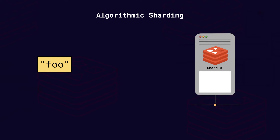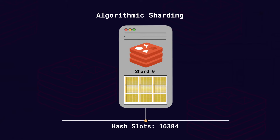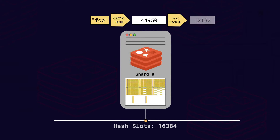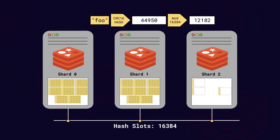Redis uses a clever approach to solve this problem: a logical unit that sits between a key and a shard, called a hash slot. The total number of hash slots in a database is always 16,384, or 16k. The hash slots are divided roughly evenly across the shards. For example, slots 0 through 8000 might be assigned to shard 1, and slots 8001 to 16,384 might be assigned to shard 2. In a Redis cluster, we actually mod by the number of hash slots, not by the number of shards. Each key is assigned to a hash slot. When we do need to reshard, we simply move hash slots from one shard to another, distributing the data as required across the different Redis instances.